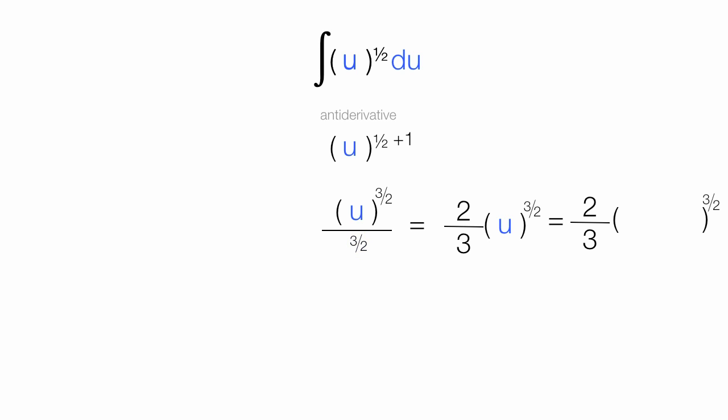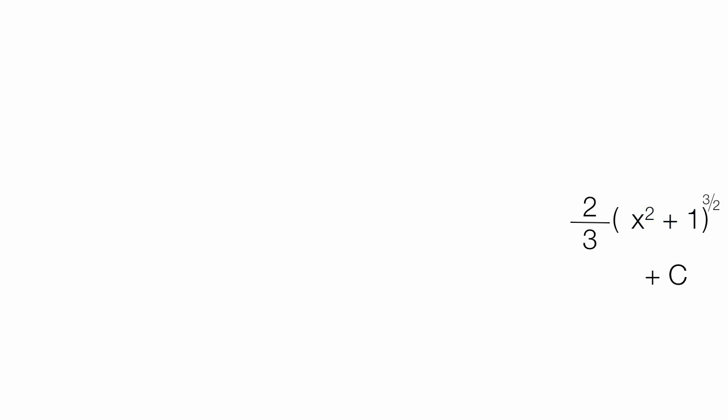Let me bring my u back in. x squared plus 1 is equal to u. Put that right where the u is. And so this is my final answer, plus c, which is my constant, some number. And here is my final answer.